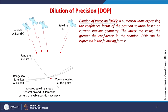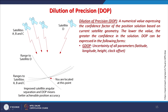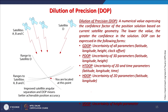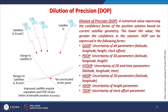Dilution of Precision (DOP) is a numeric value expressing the confidence factor of a position solution based on current satellite geometry. The lower the value, the greater the confidence. It can be expressed as GDOP (geometric), PDOP (positional), HDOP (horizontal — latitude and longitude only), VDOP (vertical), and TDOP (time, for uncertainty of clock offset parameters). The key point: the smaller the DOP value, the better the solution.